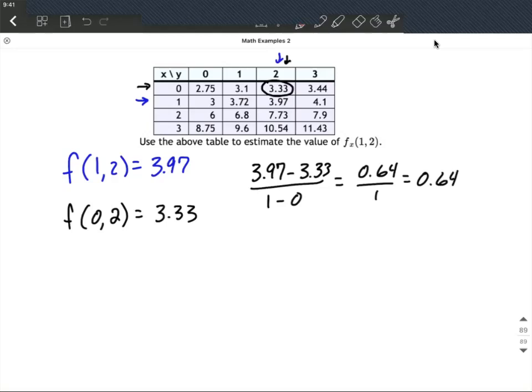Now, we could have gone the other direction as well. We could have increased our x value and moved it up here to 2. So picking that value out, f(2, 2) goes along with an output value of 7.73.